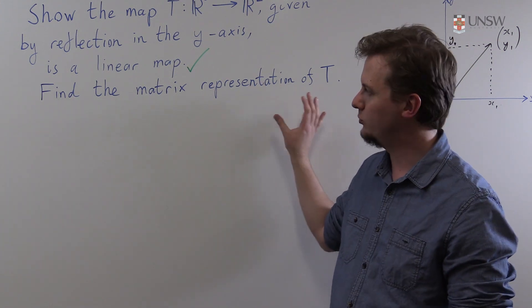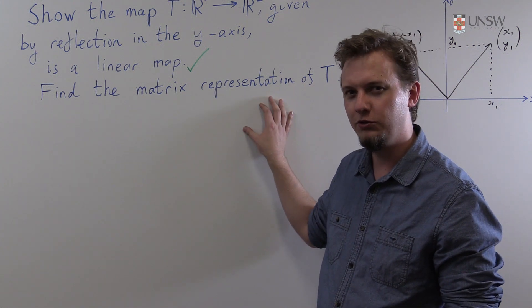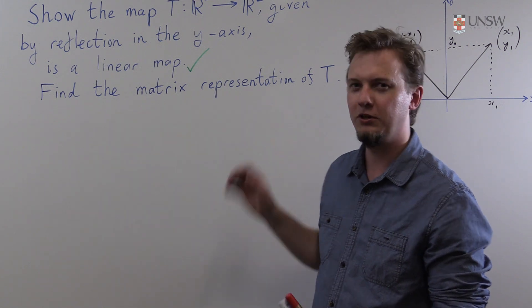Now because this is a linear map I know such a representation will exist and if I wanted to find it I could use the matrix representation theorem. But that might be a little bit overpowered for this.